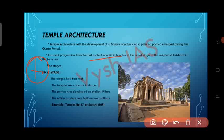In the first stage, the temple had a flat roof and was square in shape. The portico was developed with shallow pillars, and the entire temple was built on a low platform. Example: Temple No. 17 at Sanchi, Madhya Pradesh.